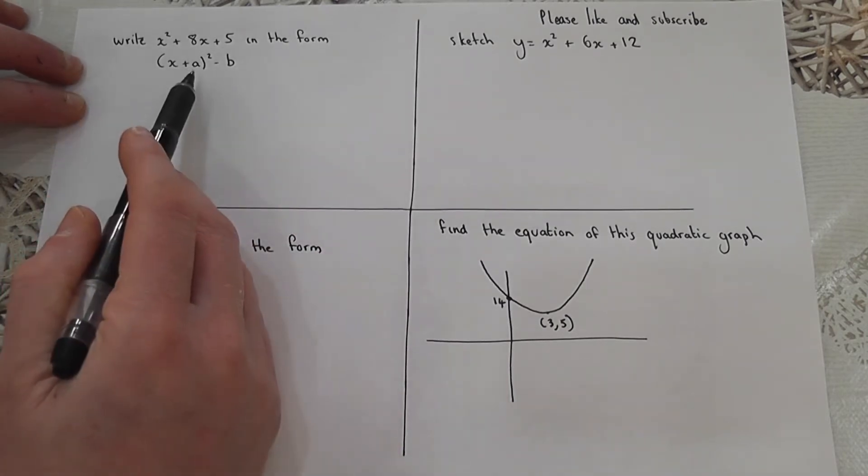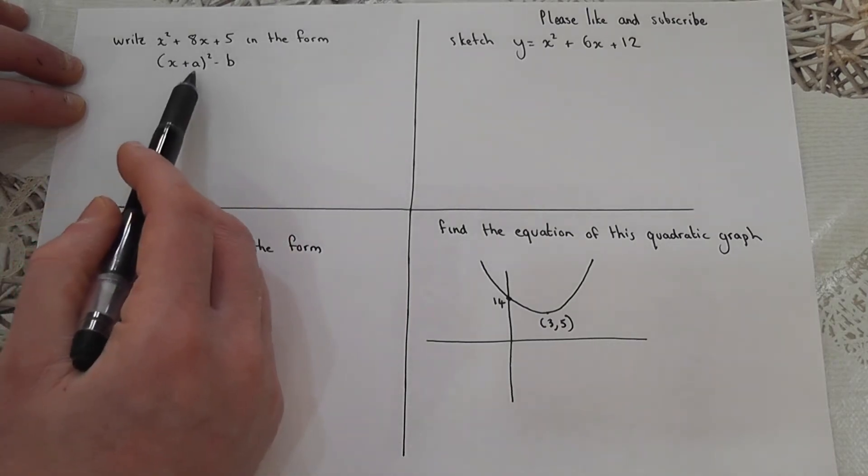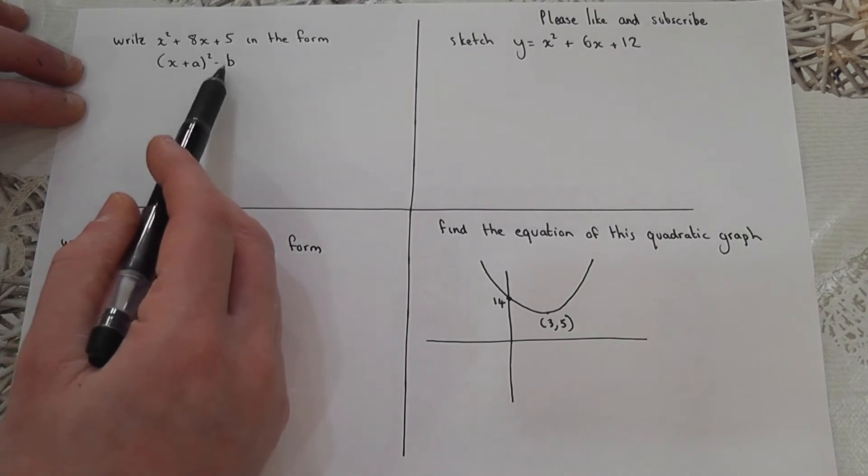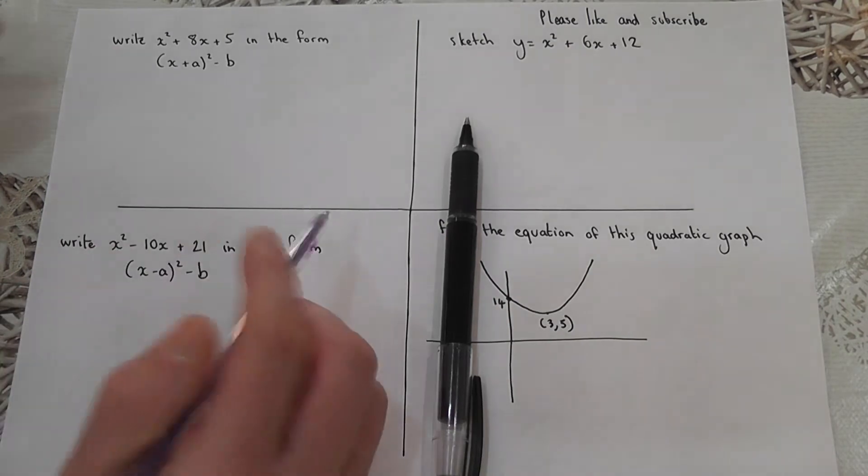The first one reviews the main skill of how to write an expression in the form x plus some number squared, take away another number. There's one golden rule here, and it's an absolute golden rule.